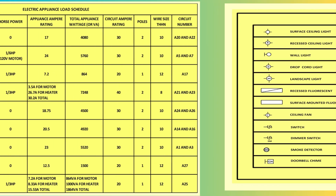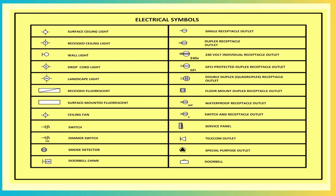This drawing depicts an electrical symbols table, which provides a comprehensive key to standard electrical symbols used in plans and diagrams. Examples include lighting symbols such as surface ceiling lights, recessed lights, fluorescent lights, and wall lights; outlet symbols including single receptacle, duplex receptacle, GFCI-protected outlets, 240V outlets, and weatherproof receptacles; switches including standard switches, dimmers, and combinations of switches with outlets; and special symbols such as smoke detectors, doorbells, service panels, and telecom outlets.